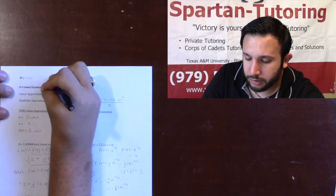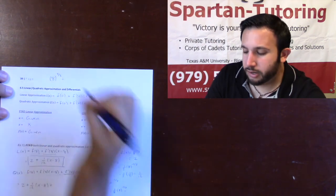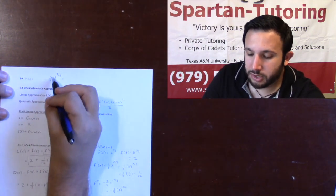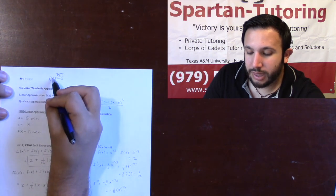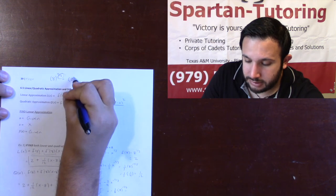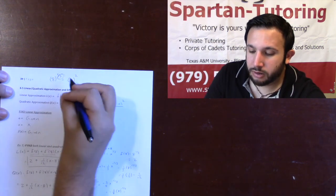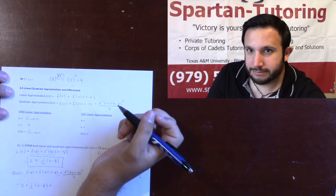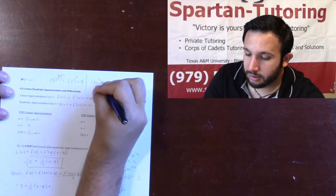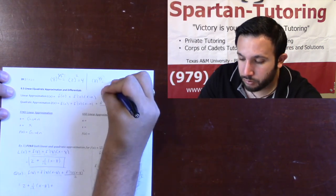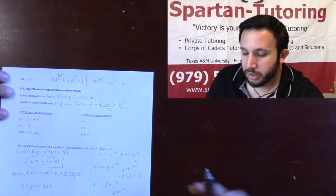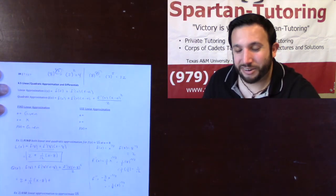To compute 8 to the two-thirds: look at the denominator 3 and take the cubed root of 8, which is 2. Then raise it to the numerator — 2 squared is 4. For 8 to the five-thirds: the cubed root of 8 is 2, and 2 to the fifth is 32. Because these are negative exponents, 8 to the negative two-thirds is one-fourth, and 8 to the negative five-thirds is one over 32. That's really all there is to it.